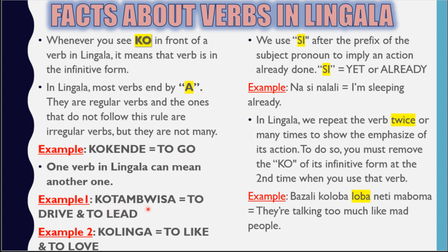Next fact: one verb in Lingala can mean more than one thing. Example: 'kotambuisa' means both 'to drive' and 'to lead'. Second example: 'kolinga' means 'to like' or 'to love'. So depending on the context you want to use the verb, it could mean one thing or another.